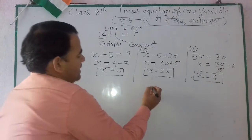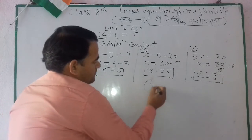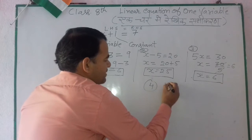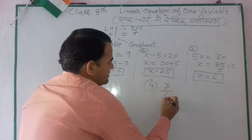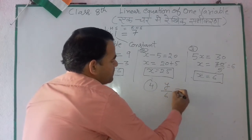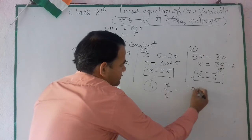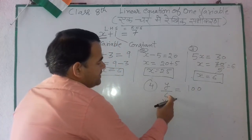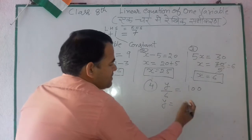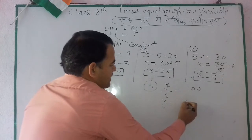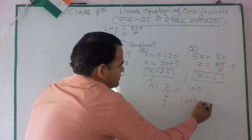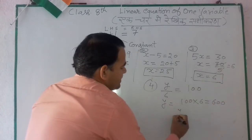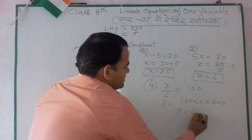Next is the fourth type. Suppose y upon 6 is equal to 100. So y is equal to — what do we do? We multiply the right side: 100 into 6 equals 600. So y's value is 600.